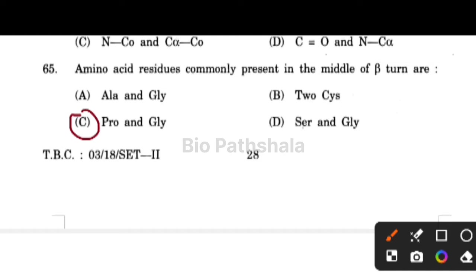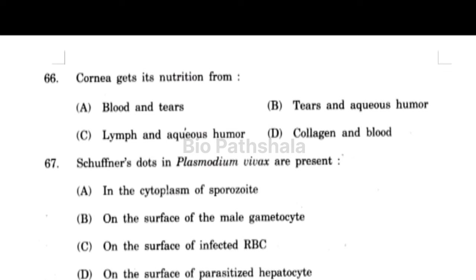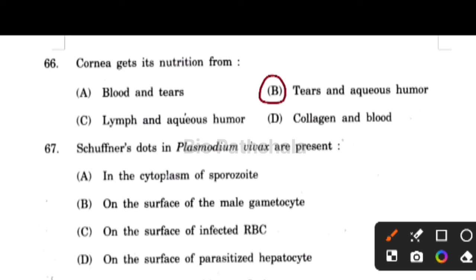Next question: cornea gets its nutrition from tears and aqueous humor. The cornea has no blood supply, so blood and lymph are absent. The cornea gets its oxygen supply directly from the air.